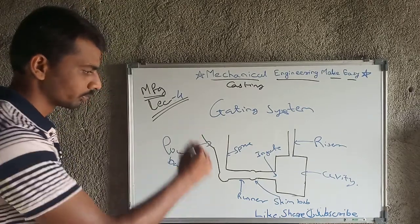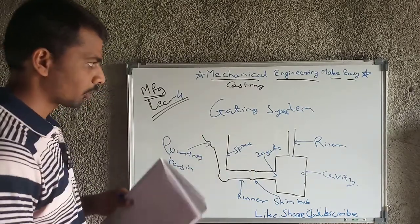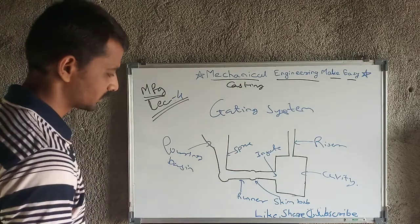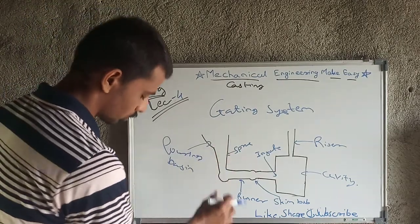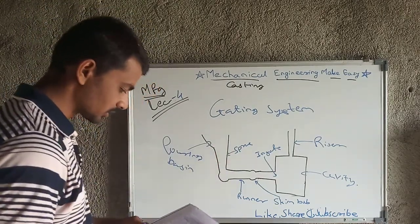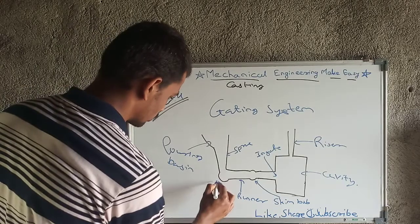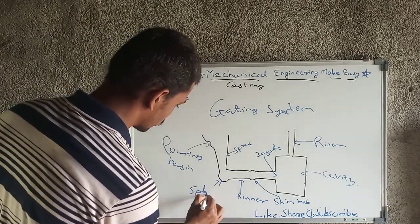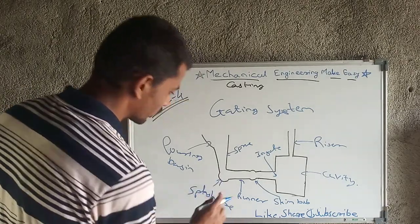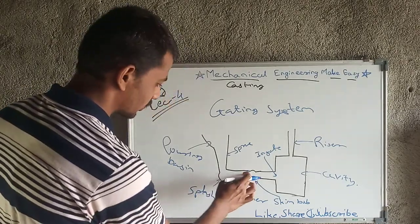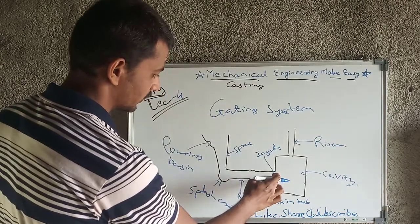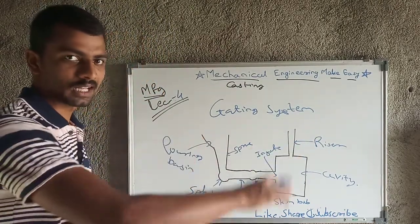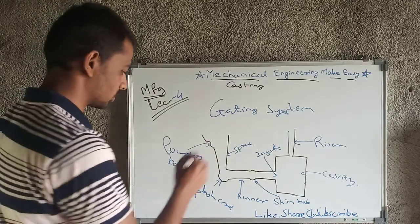I have drawn a very simple form of the gating system. There is a pouring basin, this is the sprue, this is the splash core, then it is the runner, skim bob, ingate, cavity, and riser. These are the components of the gating system.